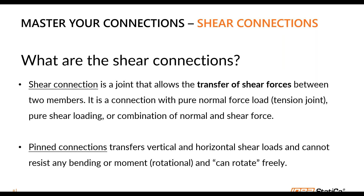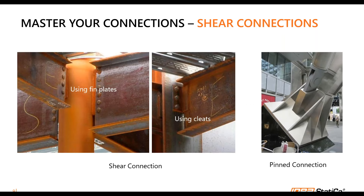A typical characteristic of a shear connection is that it can transfer shear forces with no bending moment, or perhaps very little bending moment. It can be loaded with pure normal force — like a tension joint — pure shear loading, or a combination of both normal and shear force. Another special group are pin connections, which also transfer normal forces and shear forces, but the difference is they can rotate freely so there's no bending moment present. Examples include shear connections using fin plates, angle bar cleats, and pin connections.